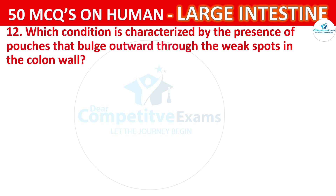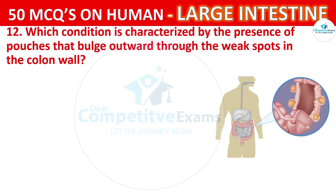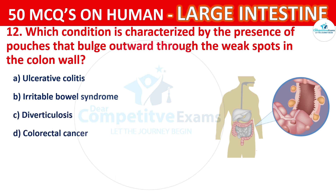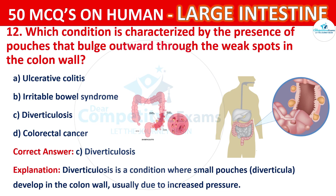Question number 12. Which condition is characterized by the presence of pouches that bulge outward through weak spots in the colon wall? The options are: Ulcerative colitis, Irritable bowel syndrome, Diverticulosis, or Colorectal cancer. The correct answer is C, that is Diverticulosis. Diverticulosis is a condition where small pouches develop in the colon wall, usually due to increased pressure.